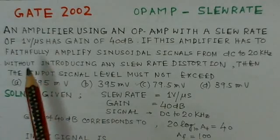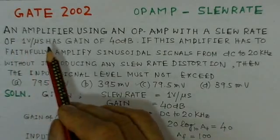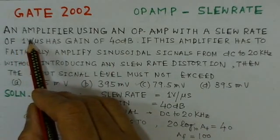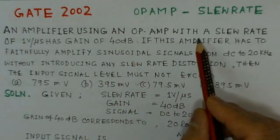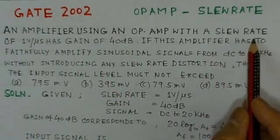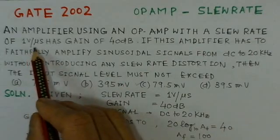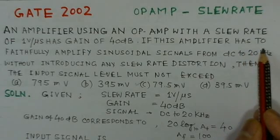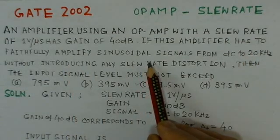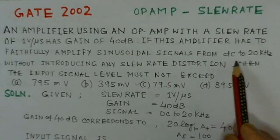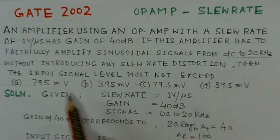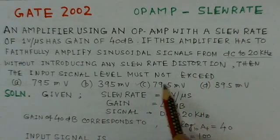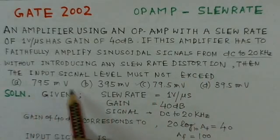We will read out the problem and then provide a solution. It says: an amplifier using an op-amp with a slew rate of 1 volt per microsecond has a gain of 40 dB. If this amplifier has to faithfully amplify sinusoidal signals from DC to 20 kHz without introducing any slew rate distortion, then the input signal level must not exceed. There are four options given.